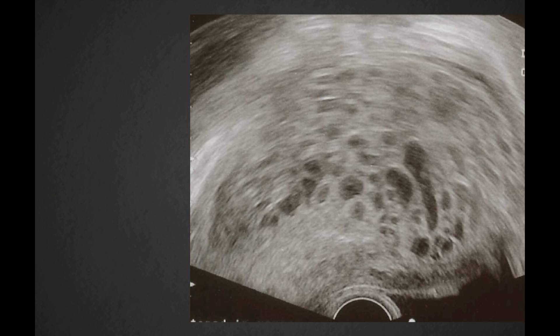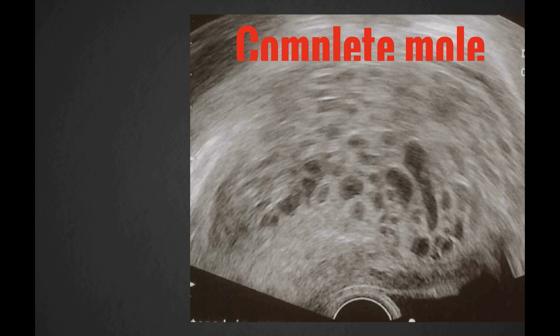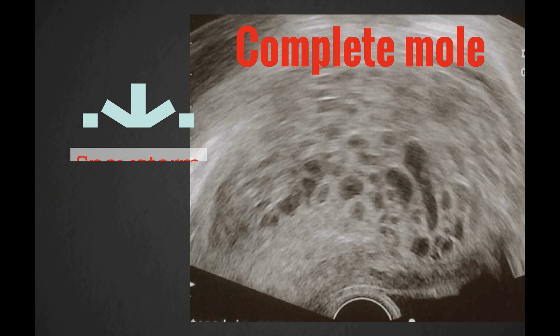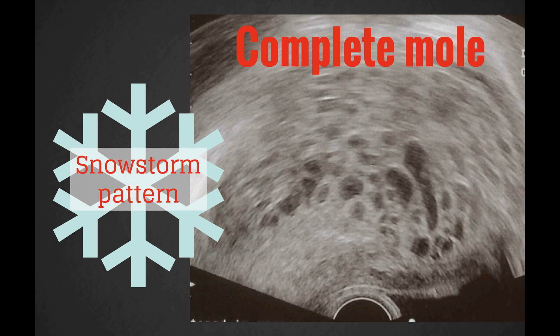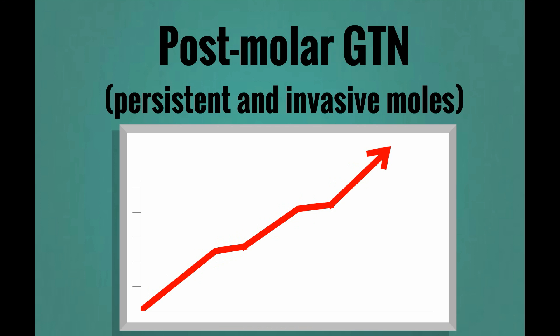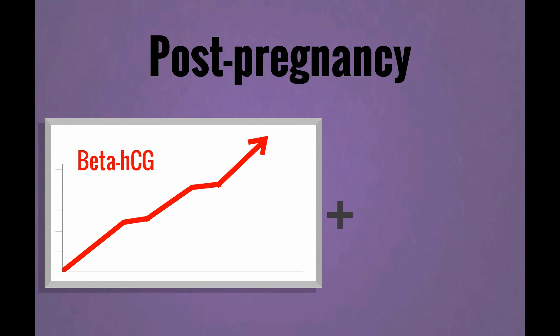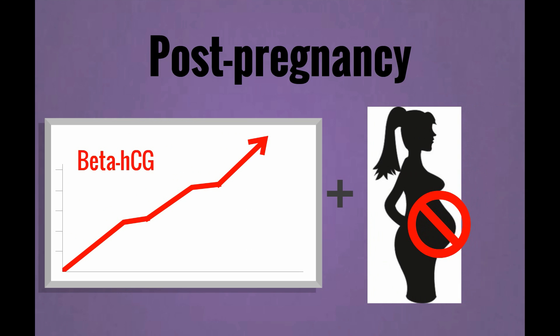A complete molar pregnancy can be identified on ultrasound with a diffuse heterogeneous echogenic pattern referred to as a snowstorm pattern. Large cystic ovaries on ultrasound can also support the diagnosis. Postmolar GTN is most frequently diagnosed from increasing or plateauing beta-HCG values after evacuation of a mole. With GTN following a normal pregnancy, an elevated beta-HCG level and exclusion of pregnancy make the diagnosis.